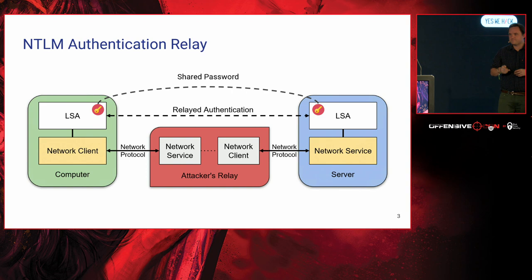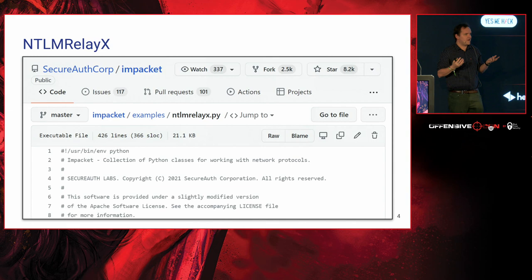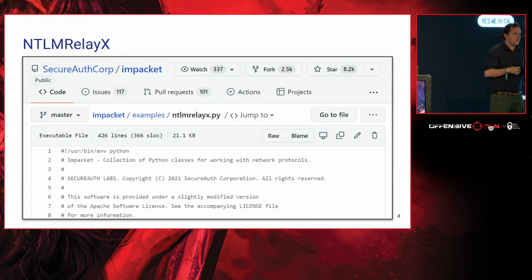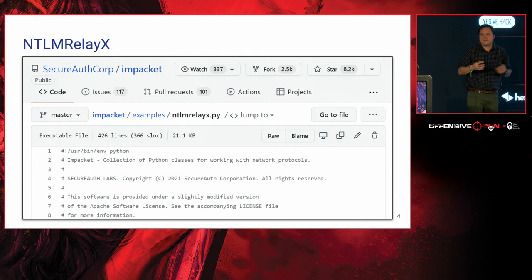There is tooling to do this — you don't have to write your own NTLM relay code. The impacket Python library has an example called ntlmrelayx, which pretty much works out of the box. It allows you to relay between different network protocols, say between HTTP and SMB and vice versa.